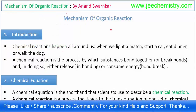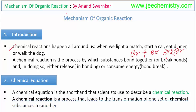Mechanism of organic reactions — introduction. Chemical reactions happen all around us: when we light a match, start a car, eat dinner, or walk a dog. These are practical examples, but a chemical reaction is a process by which substances bond together or break bonds. For example, two bromine molecules may bond together and then separate.